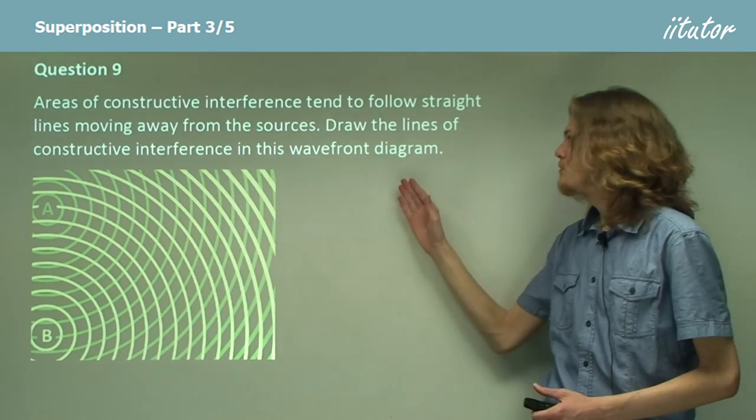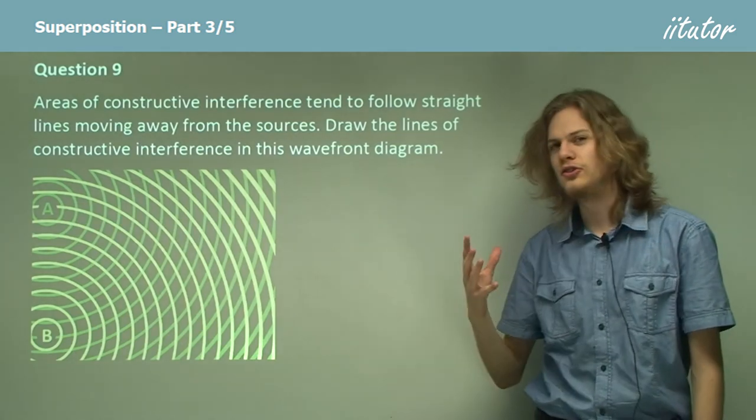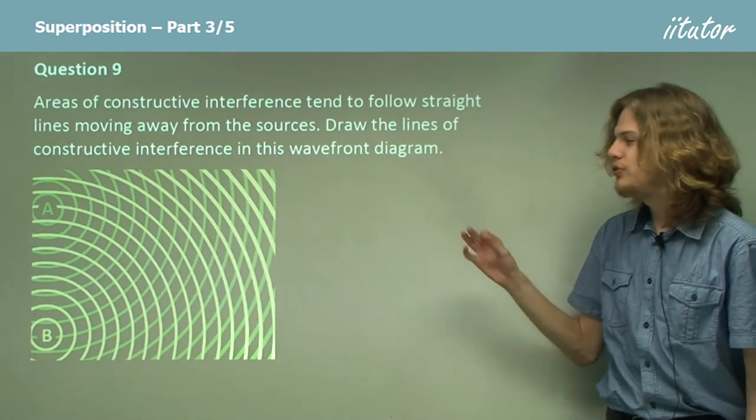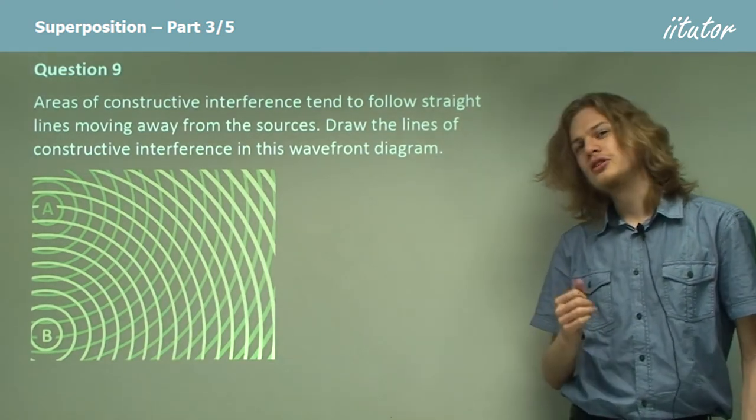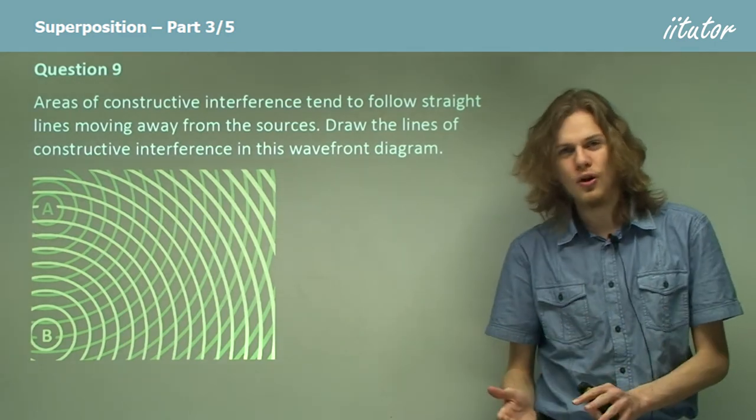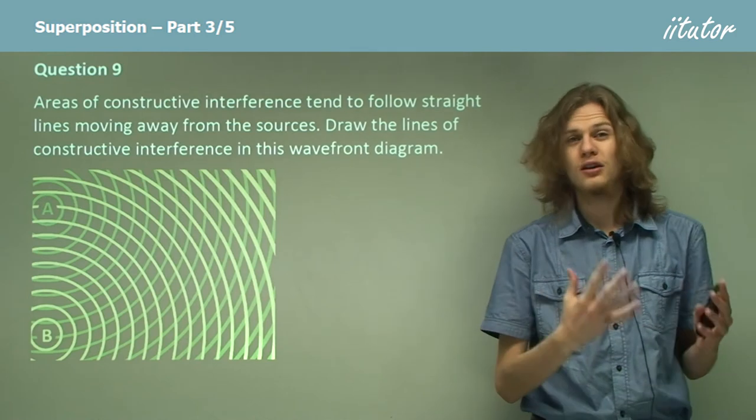Areas of constructive interference tend to follow straight lines moving away from the source. Draw the lines of constructive interference in this wave front diagram. Now remember constructive interference occurs when two crests or two troughs of different waves meet up.